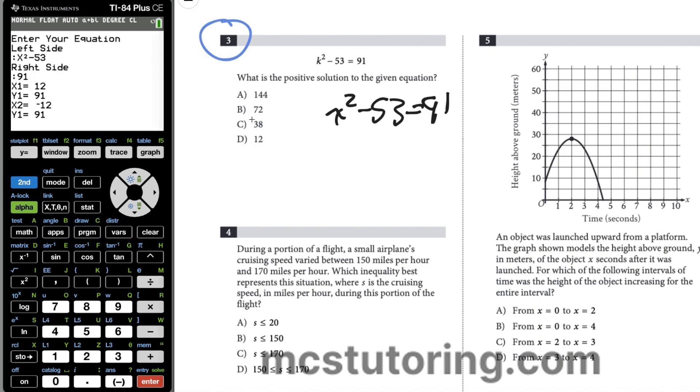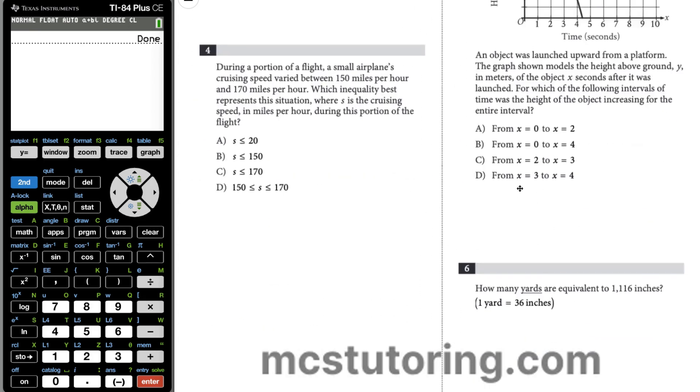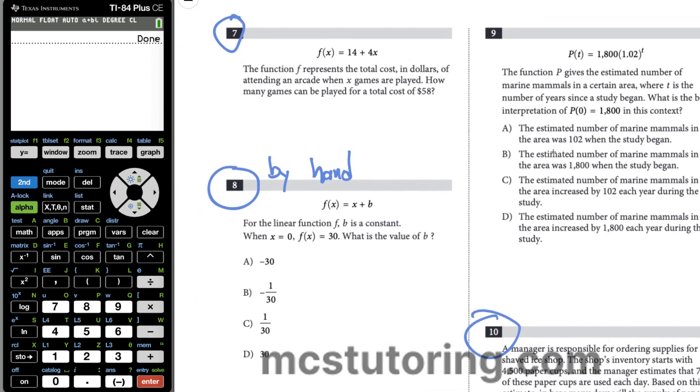The positive one is going to be 12. The negative one is negative 12. So we're going to choose this 12 here, which is option D. We're going to press enter twice to rerun the program. That was question 3. The next one is 7.